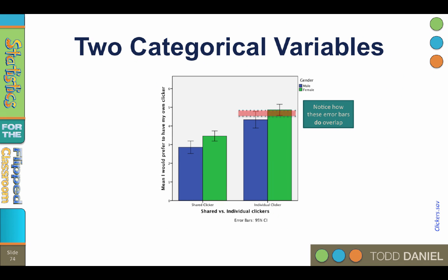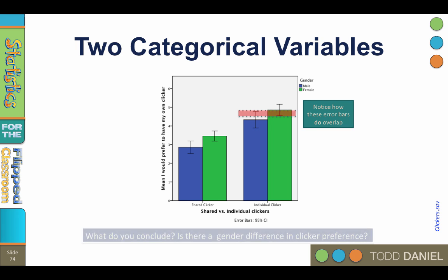We notice two interesting things in this split bar graph. The first is that the same pattern emerges for both groups. Preference for an individual clicker was slightly lower among males than among females. Another thing we see is the error bars for the two groups do overlap. This substantial overlap of the error bars suggests that males and females do not differ statistically significantly in their average level of preference.